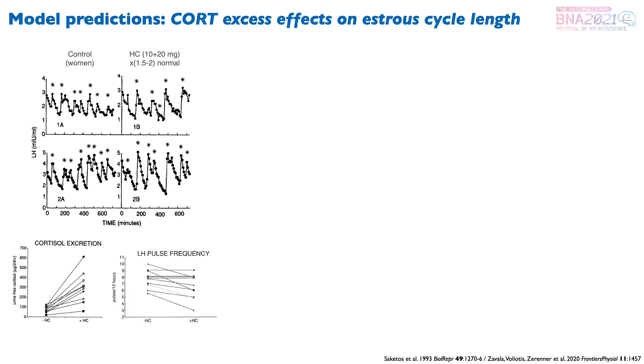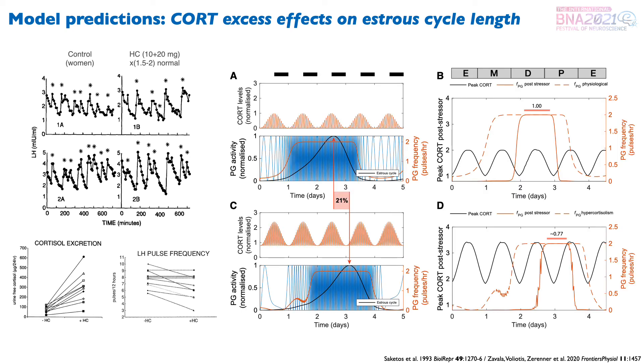Lastly, we wanted to see whether the model could predict results similar to a study in women where hydrocortisone supplementation reduced LH frequency. To do this, we simply simulated the scenario of pathologically high levels of cortisol. Surprisingly, the model predicted that the pulse generator will retain a very similar dynamics than in the normal physiological scenario, except that the cycle phase will be advanced by approximately 21% of the total cycle length. In other words, the model predicts that under excess cortisol, the onset of ovulation will be delayed.